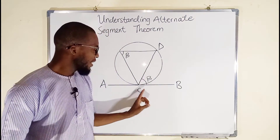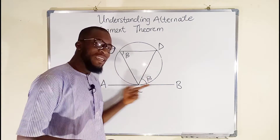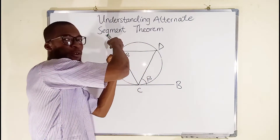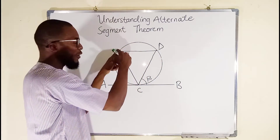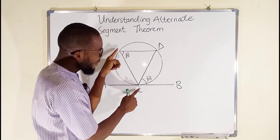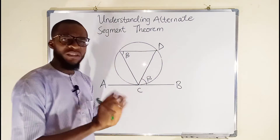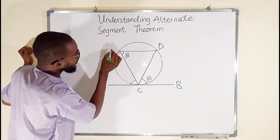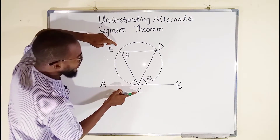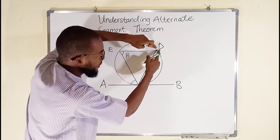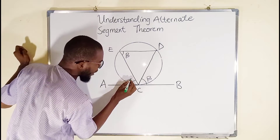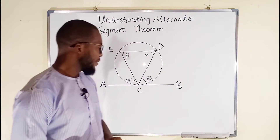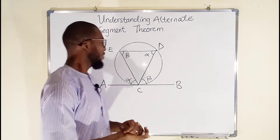What the Alternate Segment Theorem is telling us is that the angle formed by the chord and the tangent is exactly equal to the angle subtended by that chord to the circumference. You can see that chord CD subtends an angle to the circumference, and it must be exactly equal to the angle formed by that chord and the tangent. Also, CE is a chord and it subtends an angle D to the circumference. Therefore, if this is alpha, this must also be alpha. That is what the Alternate Segment Theorem states. But should we prove it? Yes, I think it is necessary.